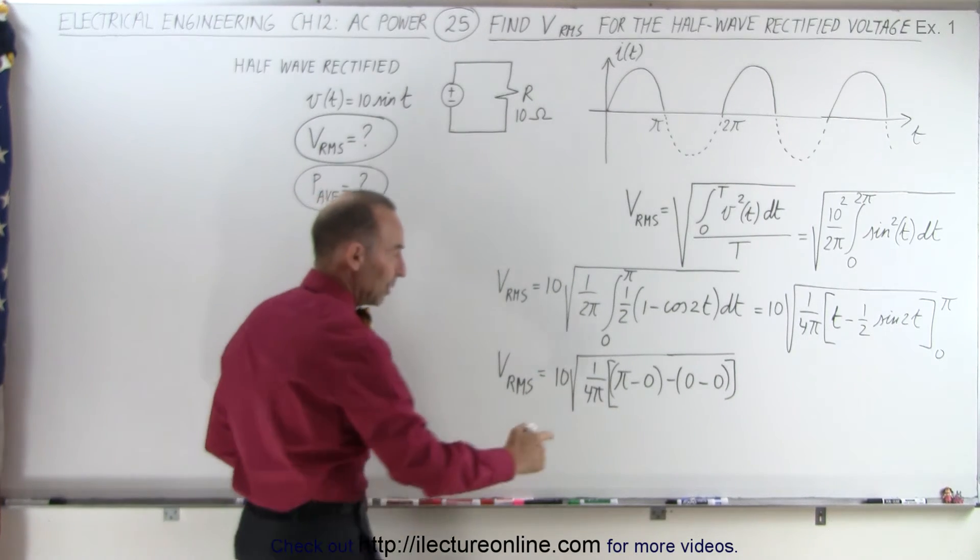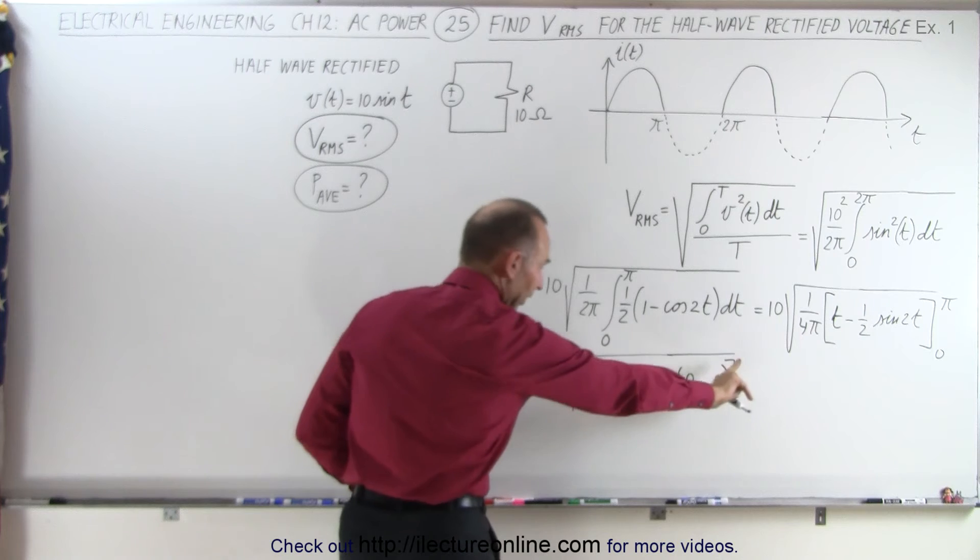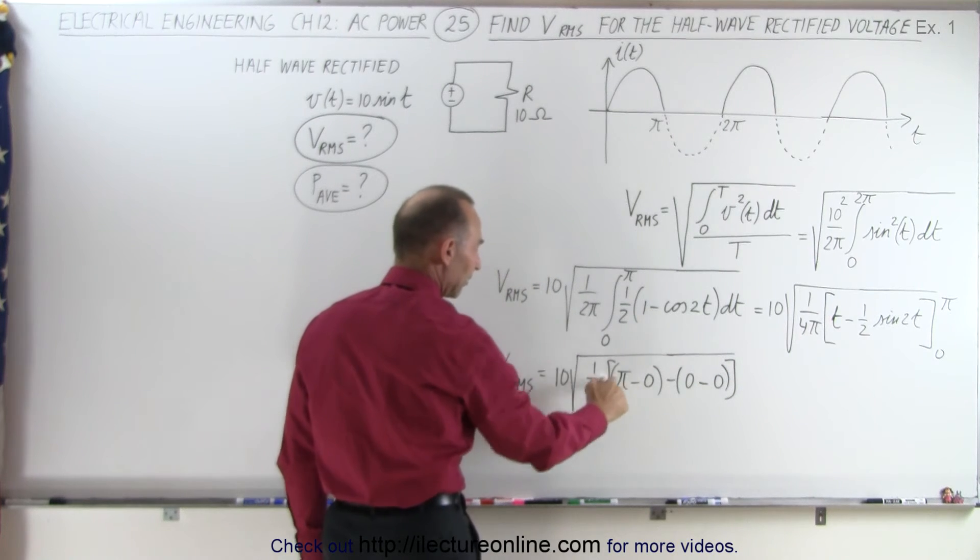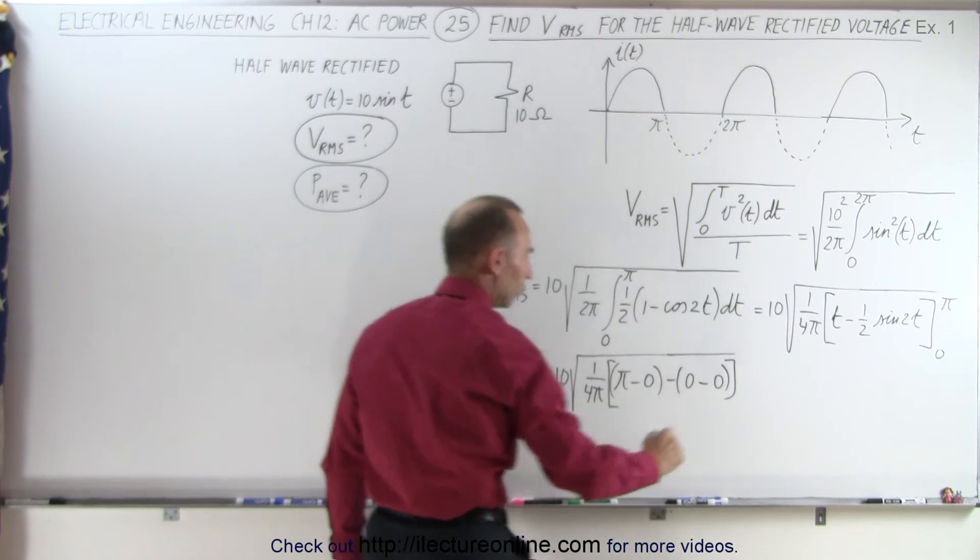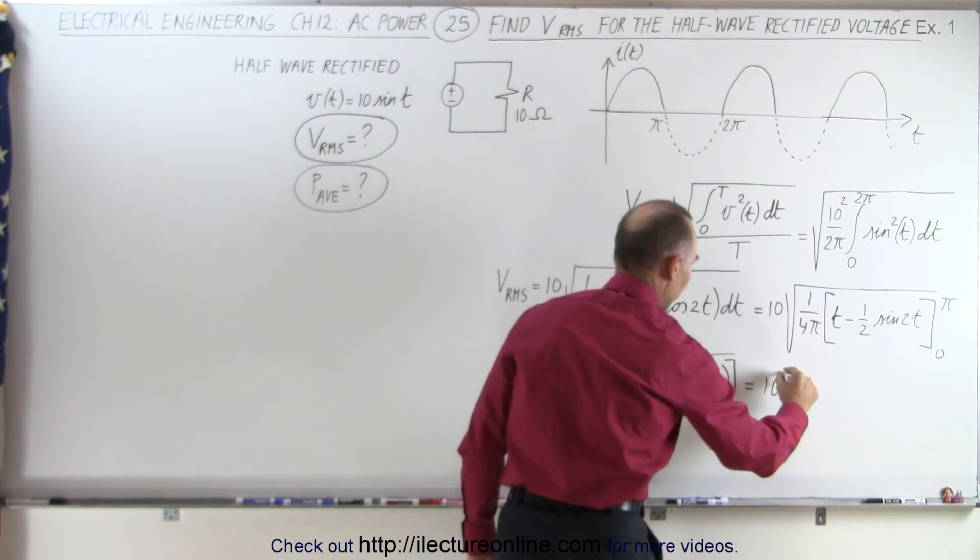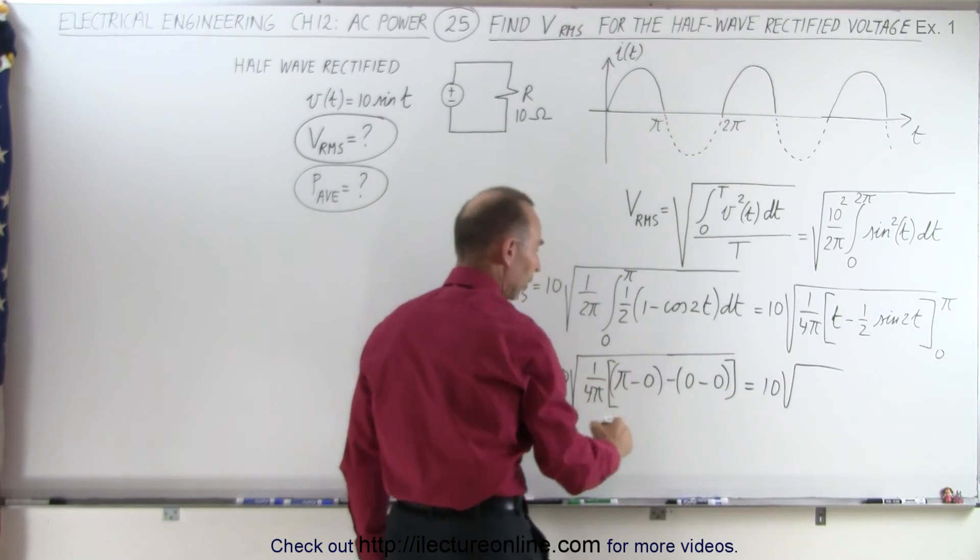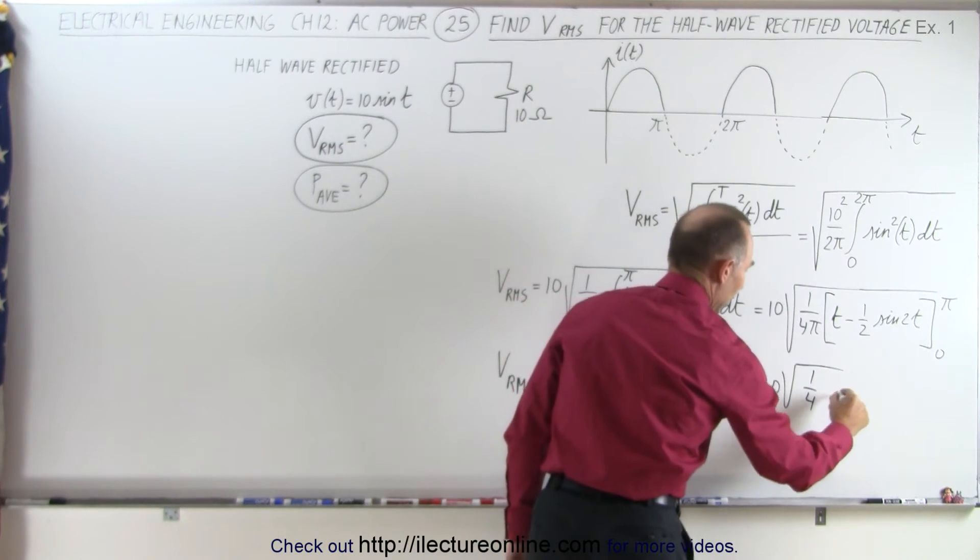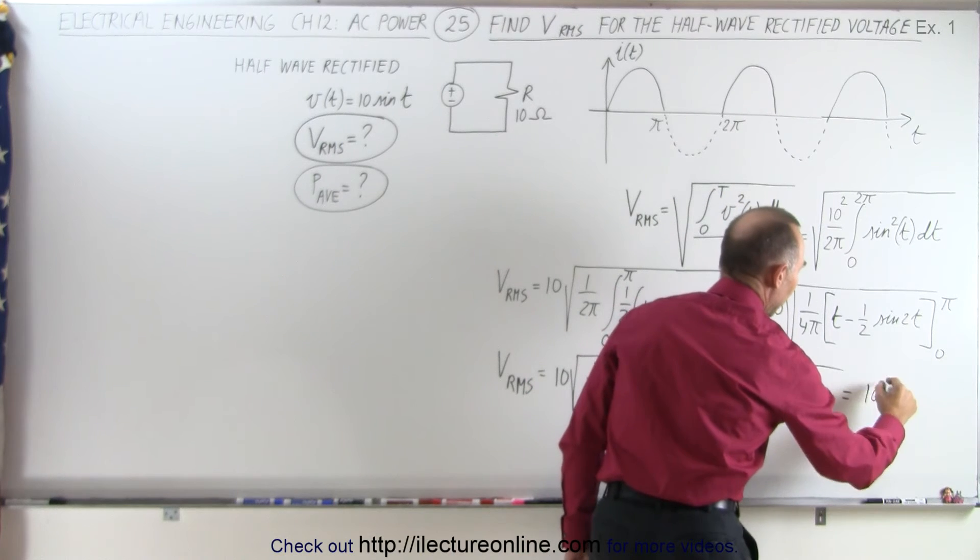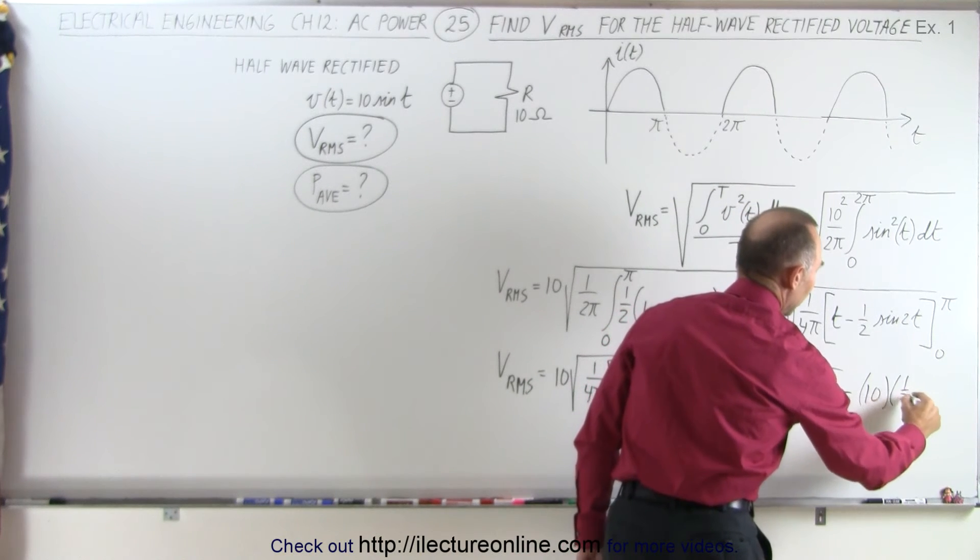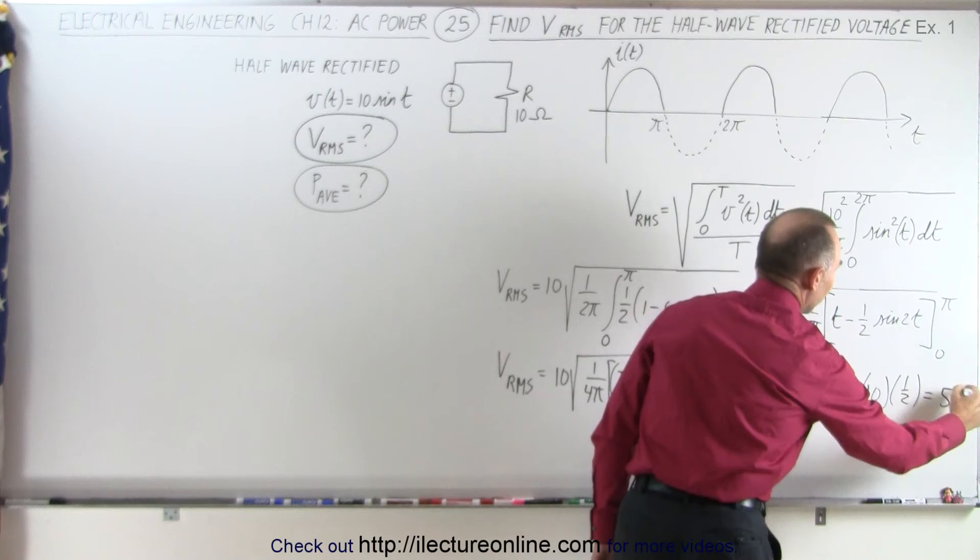And now you can see that everything else is 0, so that cancels out. π divided by π, that cancels out. So this is equal to 10 times the square root of 1 over 4, which is equal to 10 times 1 half, which is equal to 5.